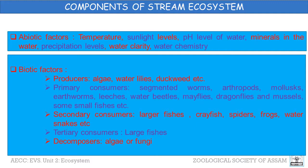Biotic factors are all the living things and factors within the ecosystem, which include producers and various levels of consumers. Producers particularly include algae — perhaps the most important biotic factor in a stream ecosystem, because without algae there would be no way for energy to enter the ecosystem. Other producers include water lilies, duckweed, and some trees along the banks. Primary consumers include invertebrate species important to stream ecosystems, such as segmented worms, arthropods, mollusks, earthworms, leeches, water beetles, mayflies, dragonflies, mussels, and some small fishes.